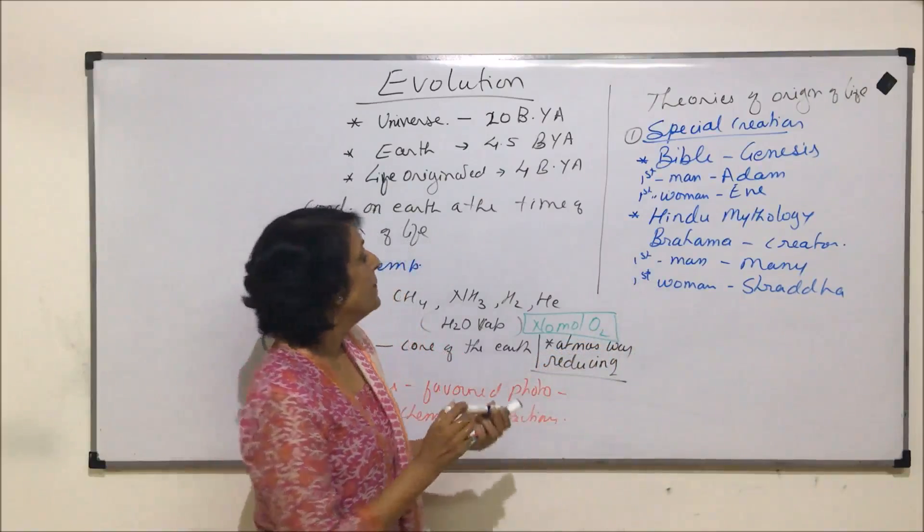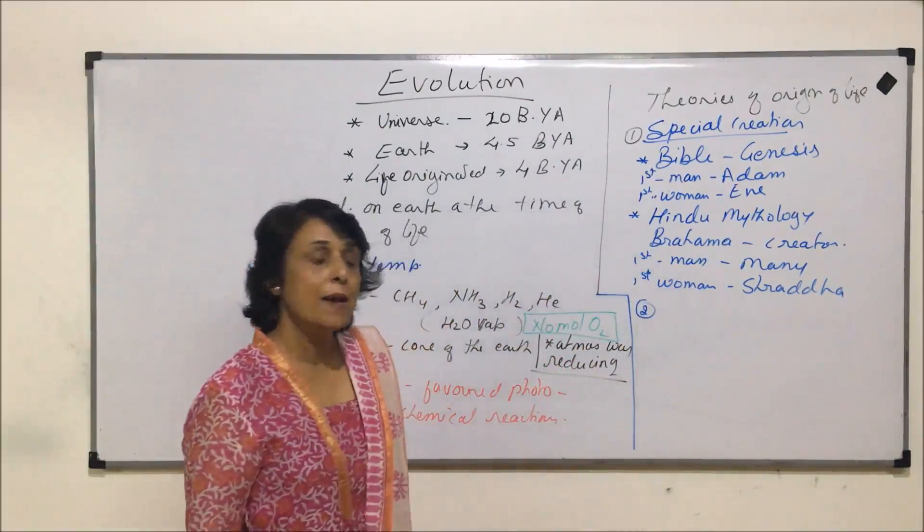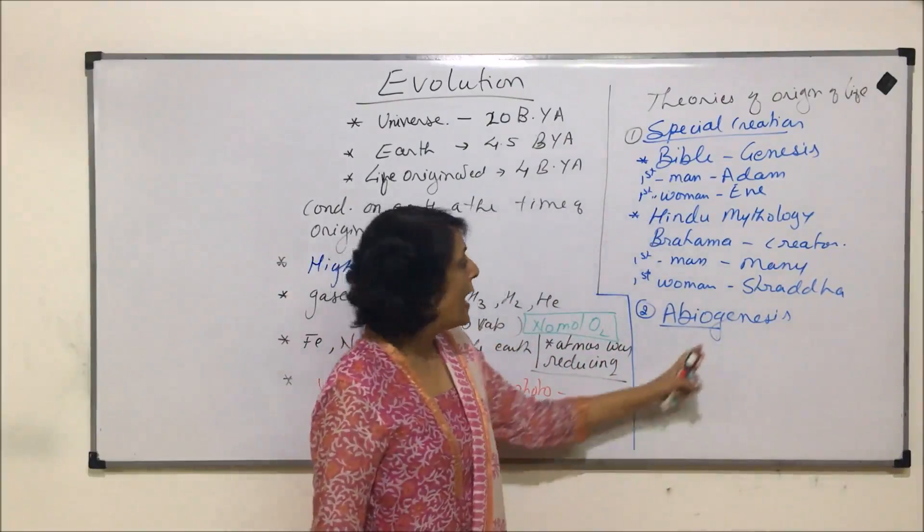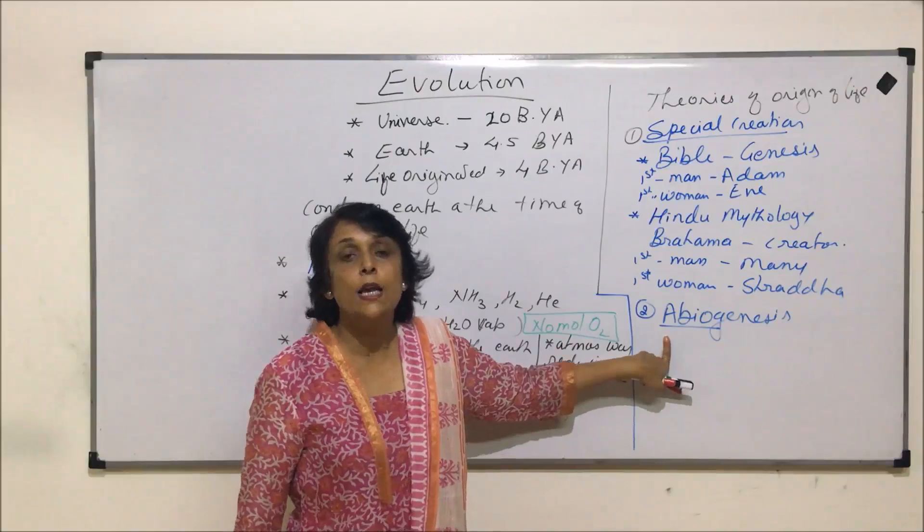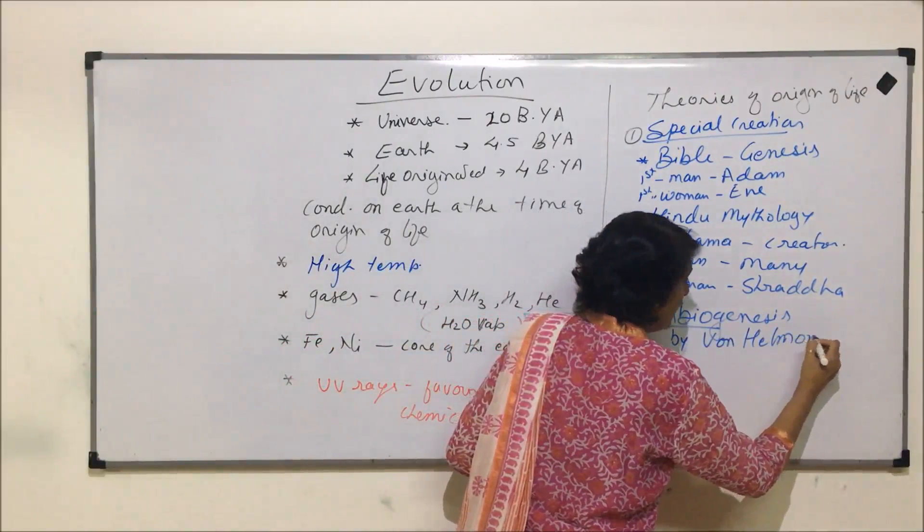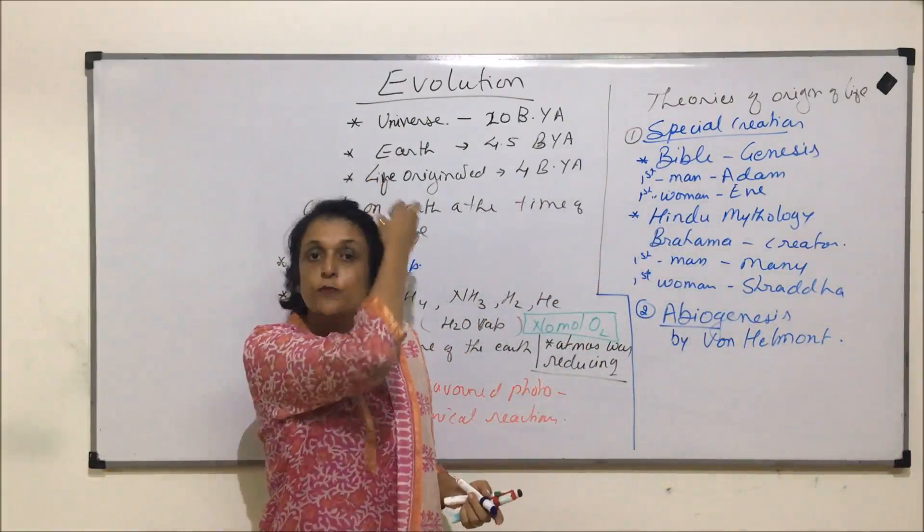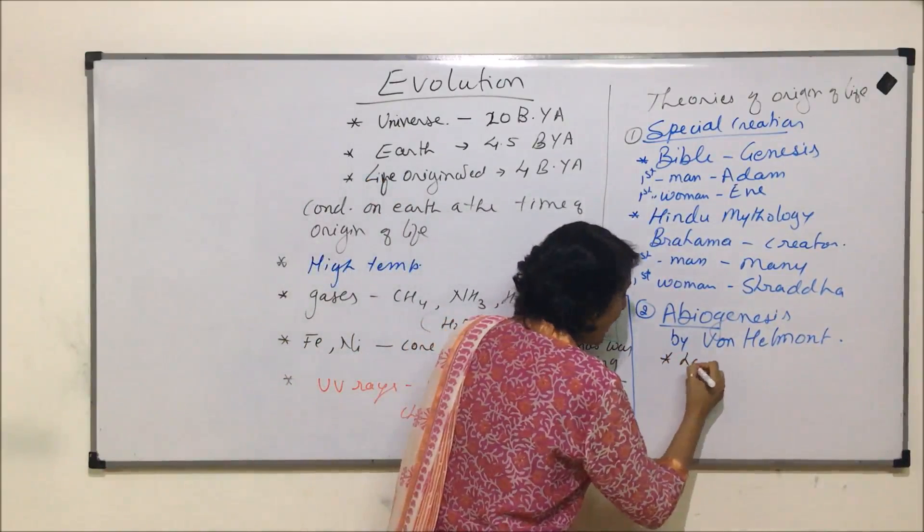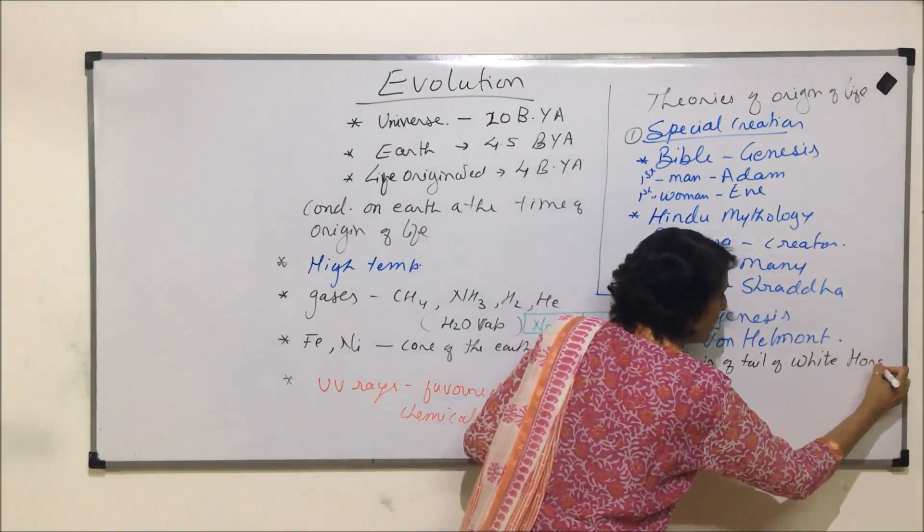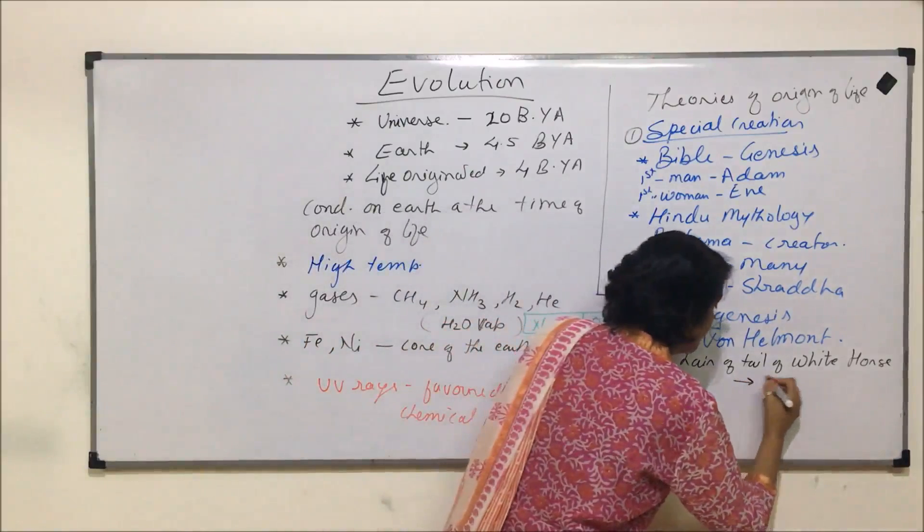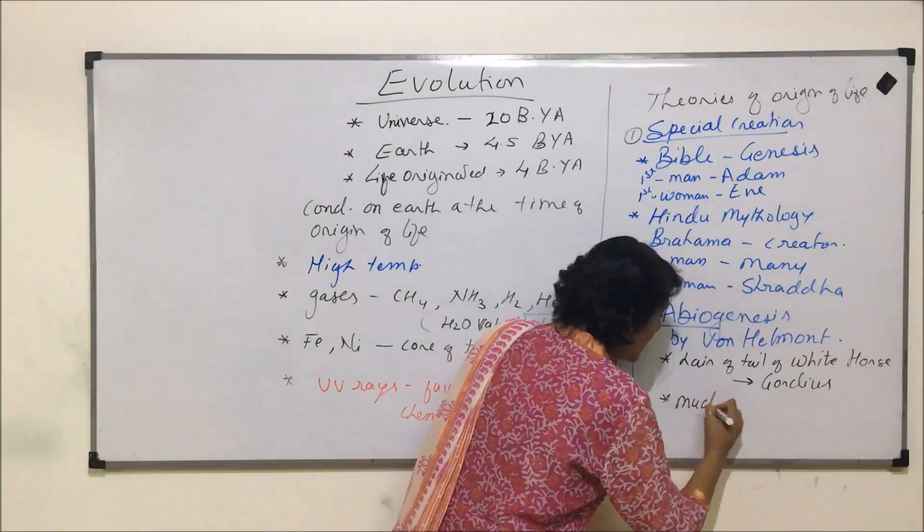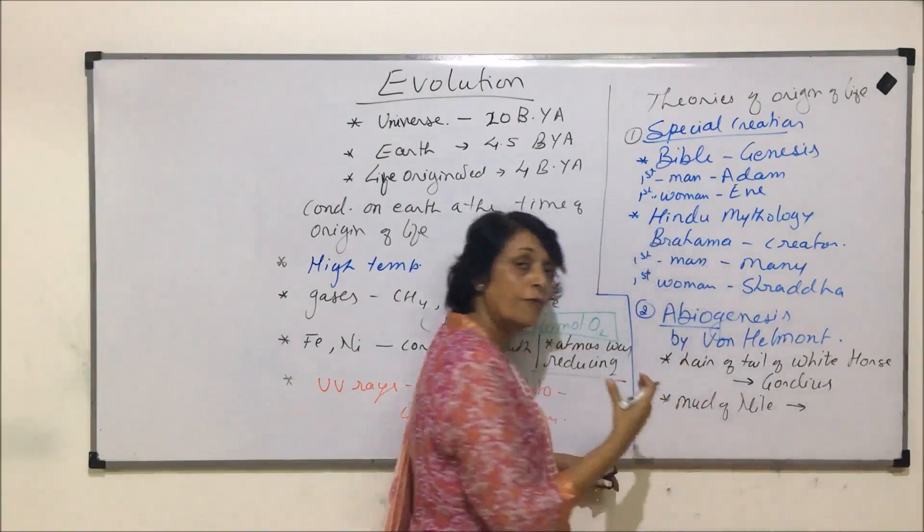But scientifically, there is no proof of such kind of thing which has happened. The second theory that we talk of is abiogenesis. Abiogenesis, a-bio means non-living and genesis is synthesis or formation. So as the name tells us, it was believed that life originated from non-living things. This theory was proposed by Van Helmont. Some said that the hair of the tail of white horse gave rise to a worm called Gordius.